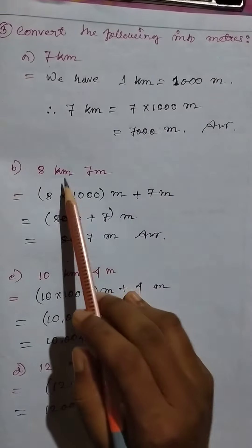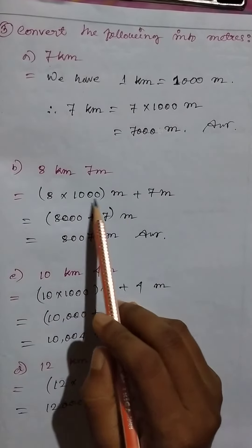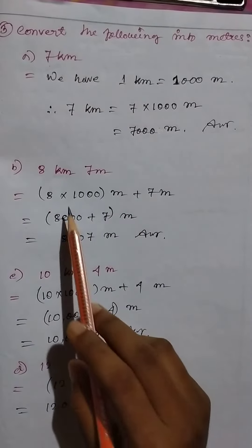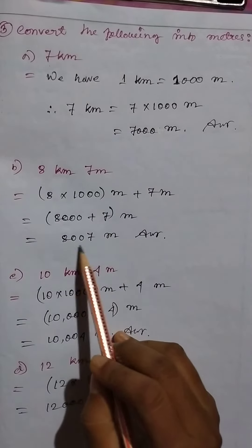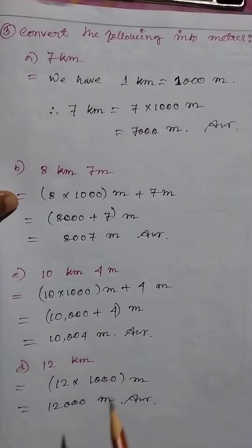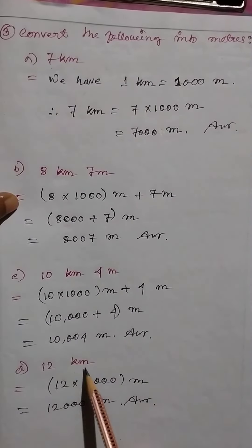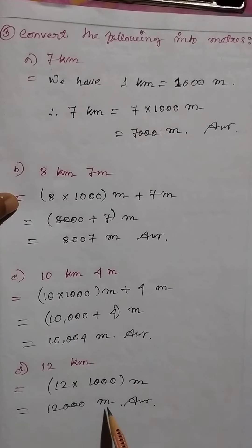Then 8 kilometers 7 meters: 8 times 1000 meters plus 7 meters, so 8000 plus 7 meters equals 8007 meters. The same way, 10 kilometers 4 meters equals 10,004 meters. Then 12 kilometers equal to 12,000 meters.